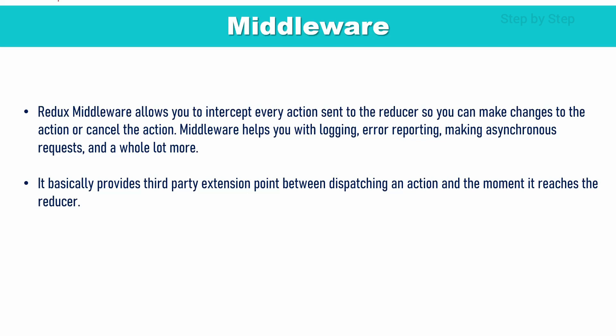Directly from A to B, there will not be any communication. From A to the third party, then from third party to B, there will be communication. This is how middleware acts — it acts as a third-party extension between the action and the moment it reaches the reducer. Now practically we are going to understand about this middleware.